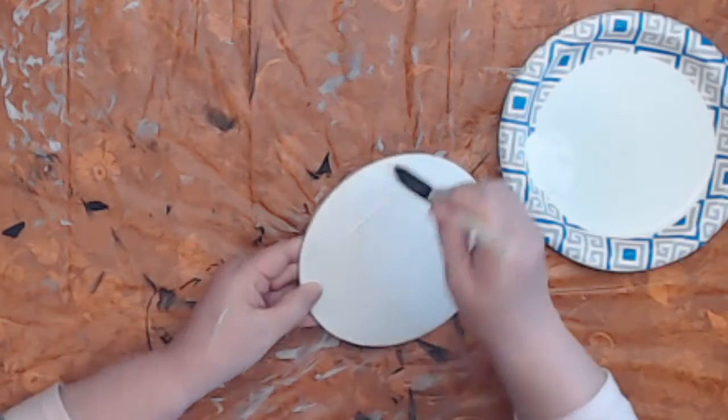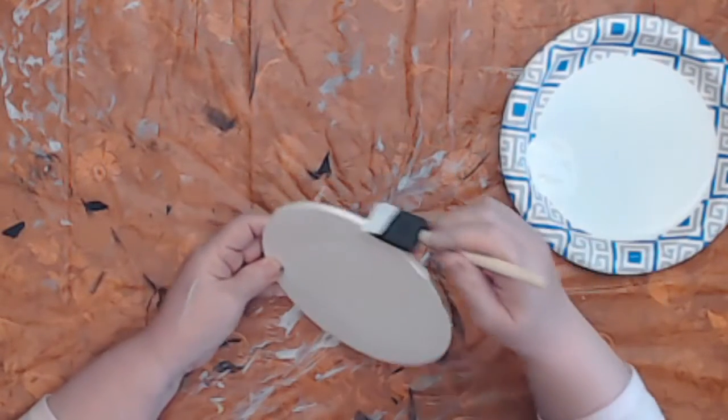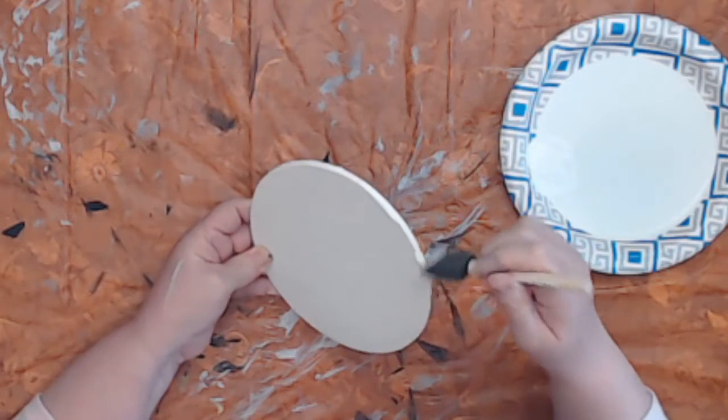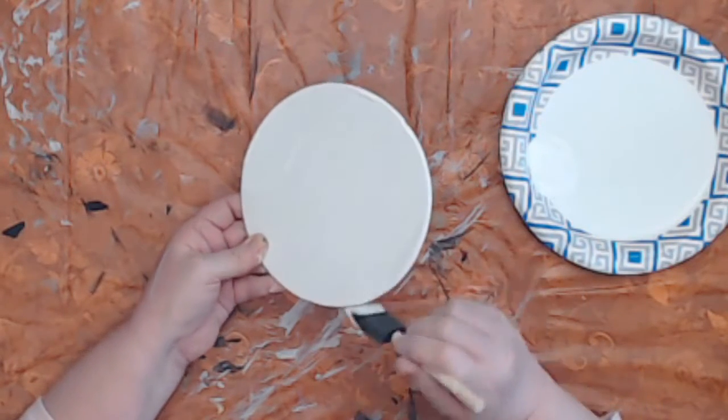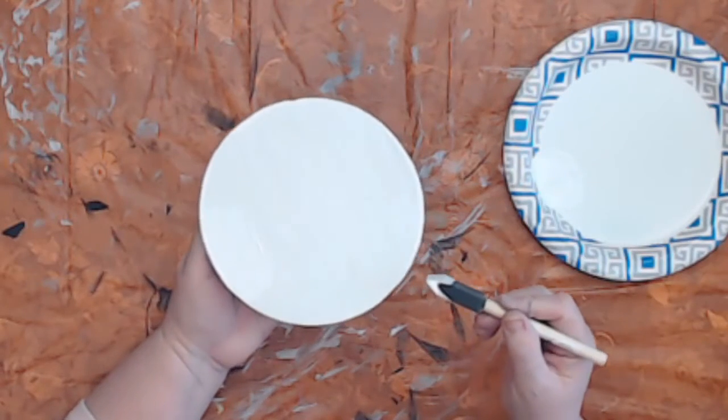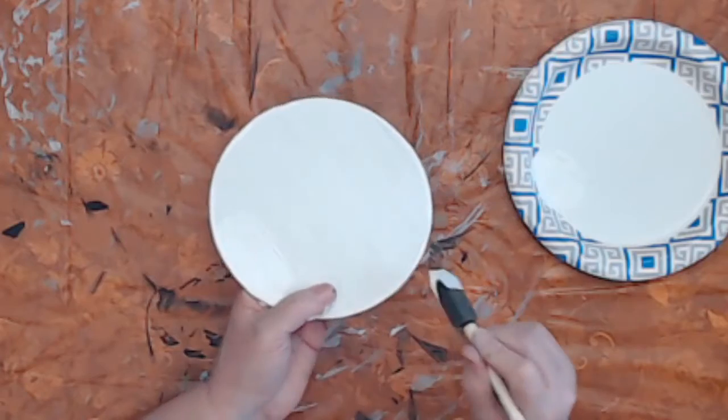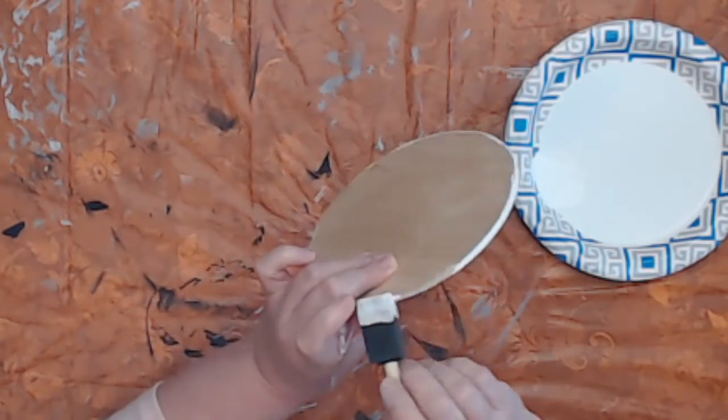But I am going to also paint the edges of the circle, because if I put this on the refrigerator and make a refrigerator magnet with it, I want the sides to look good. So I'm going to quickly paint the rest of the sides and then just smooth everything out.